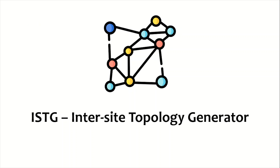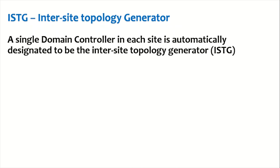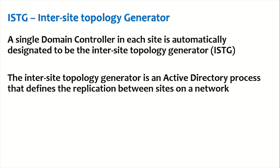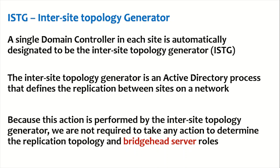The inter-site topology generator, or ISTG, is a process where a single domain controller in each site is automatically designated as the inter-site topology generator. The ISTG is an Active Directory process that defines the replication topology between Active Directory sites. Because this is performed automatically by the ISTG, we are not required to manually determine the replication topology or the bridgehead server roles.